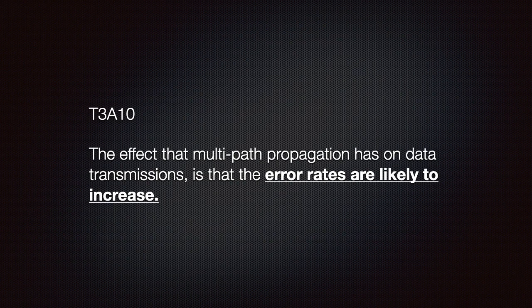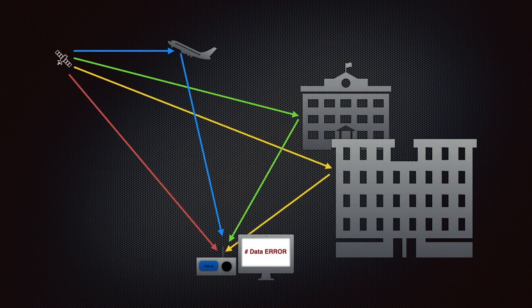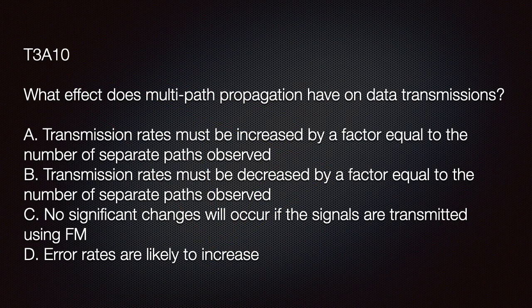We should know that the effect of multipath propagation on data transmission is that error rates are likely to increase. While error correction algorithms are effective at digging out signals from noise, multipath propagation can increase error rates considerably. The exam question: What effect does multipath propagation have on data transmissions? Options include increasing or decreasing transmission rates by a factor equal to the number of paths, no change with FM, or error rates likely to increase. The correct answer is D: error rates are likely to increase.